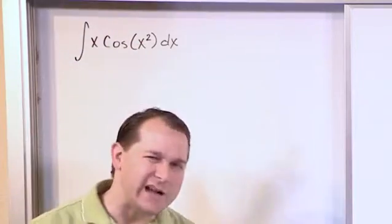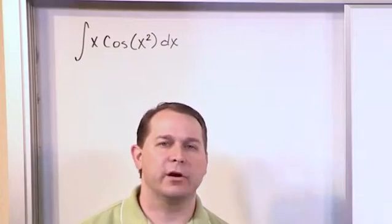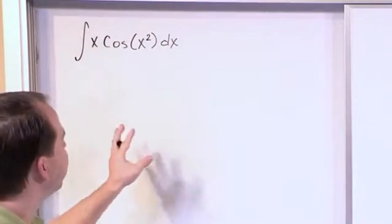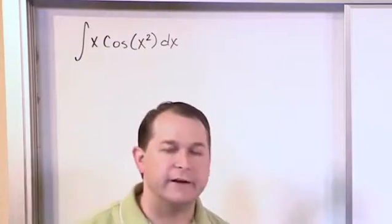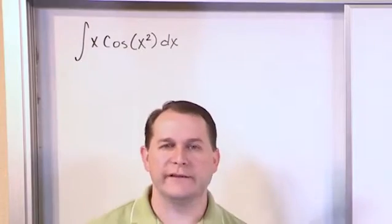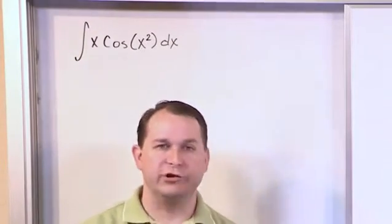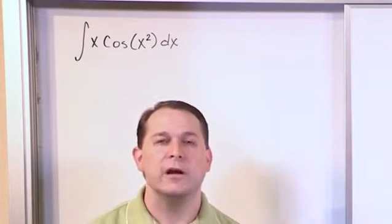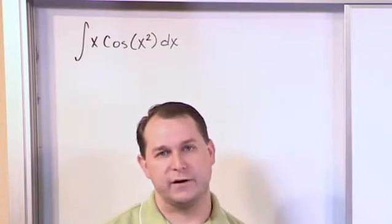First of all, we have the cosine of something, so we kind of know how to integrate that, but the argument inside is not cosine x, it's cosine x squared. So that's different than anything we've learned before. And then if that wasn't enough, we've got all this stuff multiplied by some other variable x outside. So that destroys any commonality with anything we've seen as far as a plug and chug kind of table. So you're going to have to use some kind of substitution to transform this integral into a form that you do know how to solve.